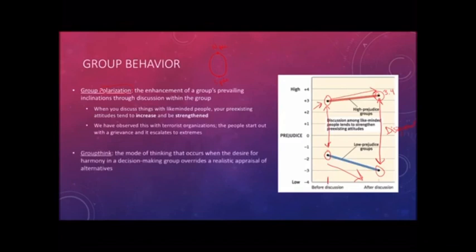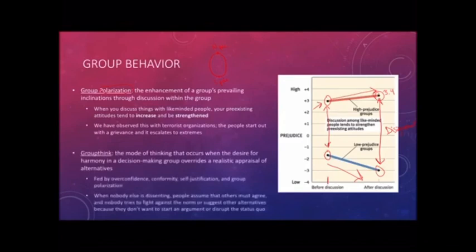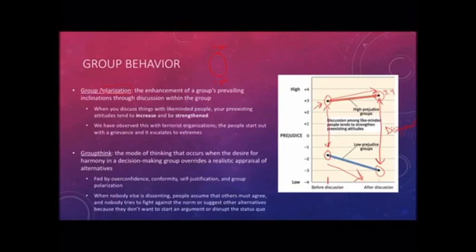Lastly, groupthink. When you're in a group discussion, you don't want to be the one person to ruin the harmony — if everyone else seems to agree, you don't want to make waves. Groupthink is fed by overconfidence, conformity, self-justification, and group polarization. When nobody else is dissenting, people assume others must agree, and nobody tries to suggest alternatives or fight the norm because they don't want to start an argument or disrupt the status quo. It's about keeping harmony, going with the flow, and passively going along with whatever the group is saying rather than engaging in critical thinking.